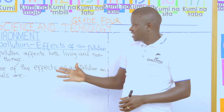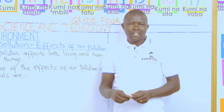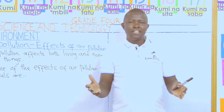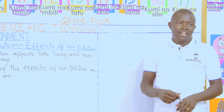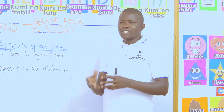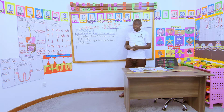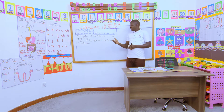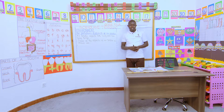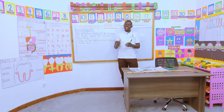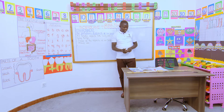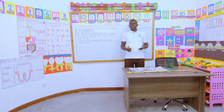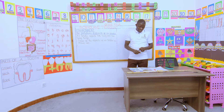Air pollution affects both living and non-living things. It affects animals, plants, and also non-living things. To be specific on animals — how does air pollution affect animals? In our groups, can we discuss what are the effects of air pollution on animals as living beings?